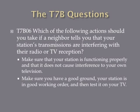Which of the following actions should you take if a neighbor tells you that your station's transmissions are interfering with their radio or TV reception? The answer is to make sure your station is functioning properly and that it does not cause interference to your own television. Check that your station isn't producing spurious emissions, all connections to the antenna and coax are solid, and you're not producing any sparks. If your equipment is functioning properly, check your own TV when you transmit. Make sure you have good ground and your station is in good working order before responding to your neighbor.